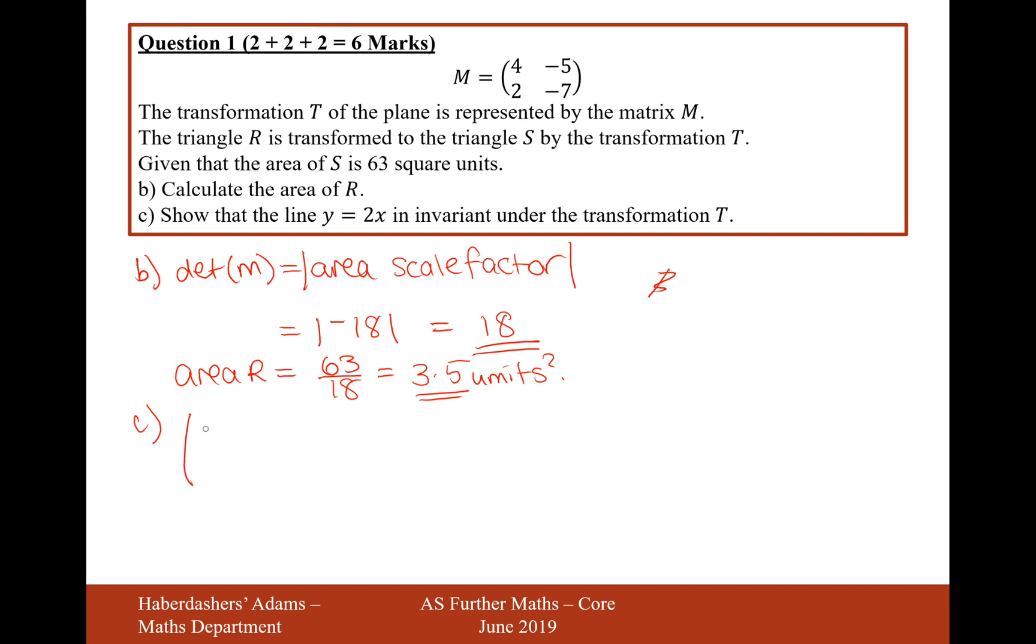So it's going to mean that the matrix (4, -5; 2, -7) will multiply by (x, 2x), because y is equal to 2x. That's what I've done here. I've transformed the coordinate (x,y), but y is equal to 2x, so it's going to be (x, 2x), onto another point on the line. That's going to equal some scale factor lambda times (x, 2x).